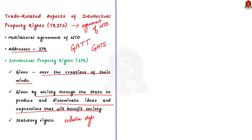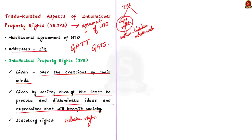Now let us understand what these intellectual property rights are. IPRs are divided into two main areas. The first is copyright and rights related to copyright: the rights of authors of literary and artistic works such as books, musical compositions, paintings, sculpture, computer programs and films are protected by copyright. The main social purpose of the protection of copyright is to encourage and reward creative work — protection is given to encourage people to do more creative work.